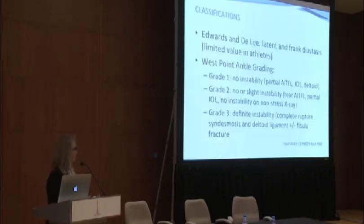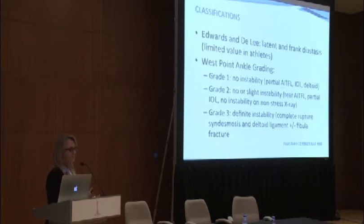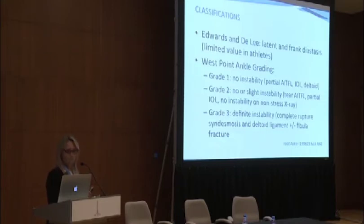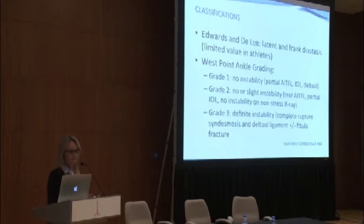For classification, the original classification by Edwardson de Lee was really looking at latent and frank diastasis for high energy trauma, so we don't really use that. We use the West Point ankle grading system — grades 1, 2, and 3. Grade 1 has no instability, grade 3 has obvious instability, and grade 2 is the difficult one to diagnose and manage because it has a degree of instability that's not always obvious.